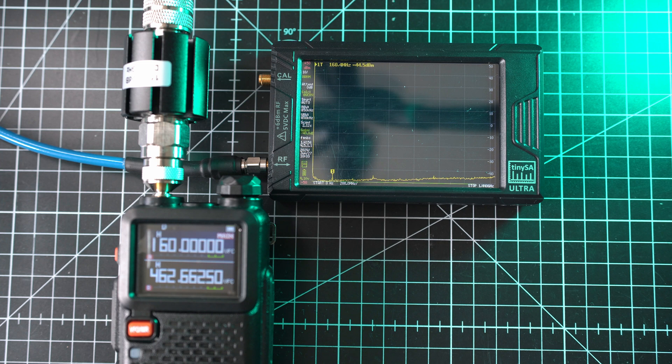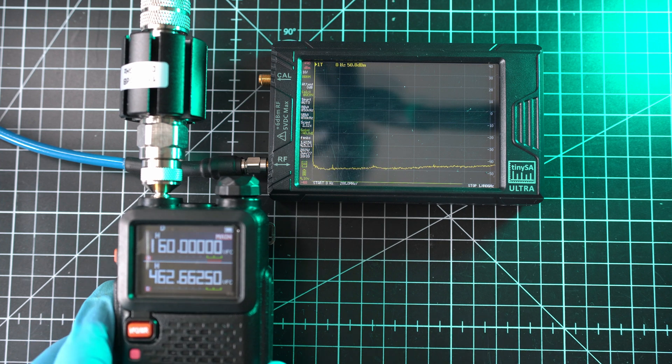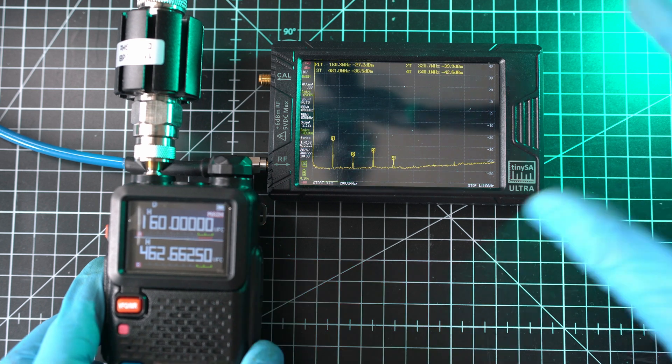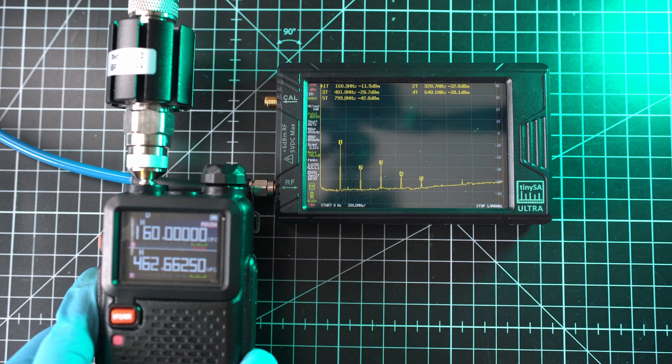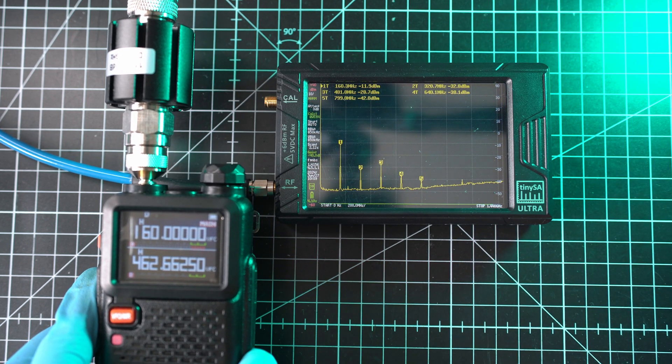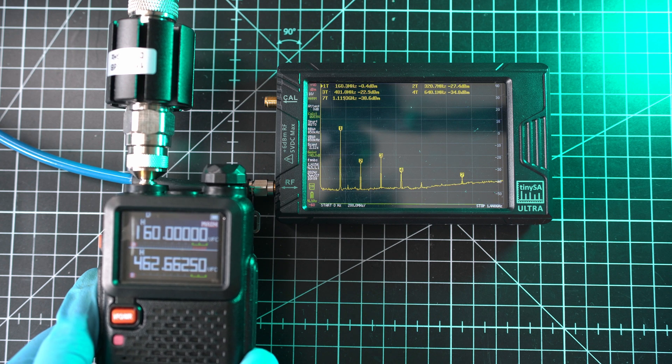Next radio is Baofeng UV5RH. This is most powerful of these three radios. So let's see how clean is its signal. Transmitting on 160 MHz at full power. And oh boy.